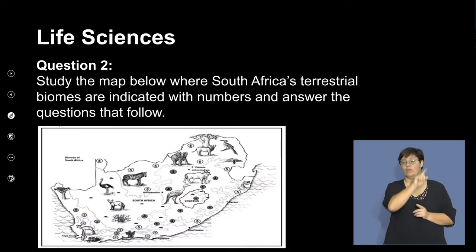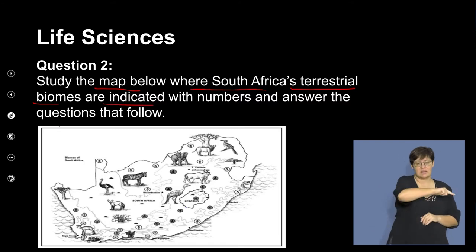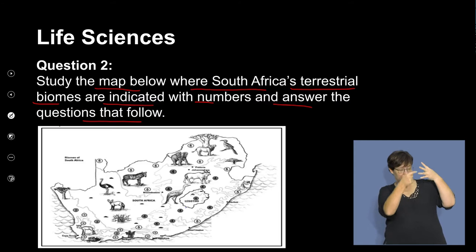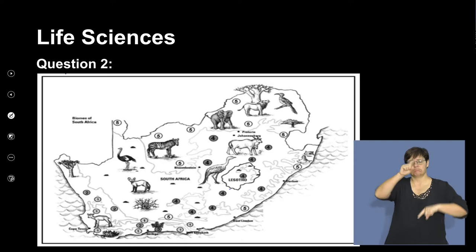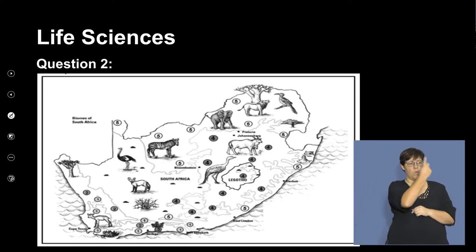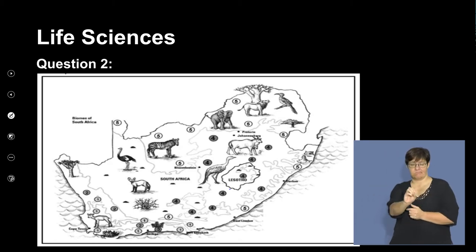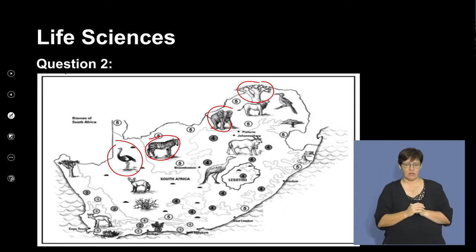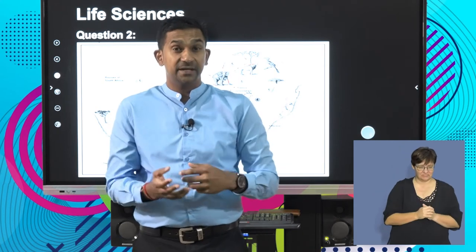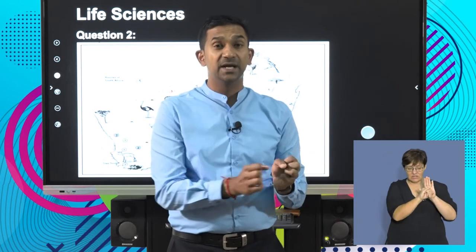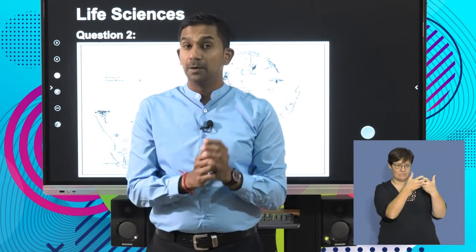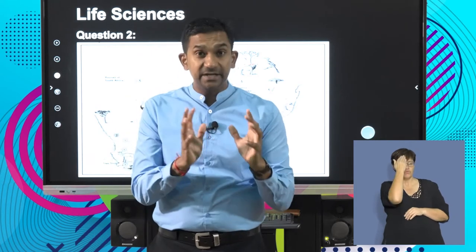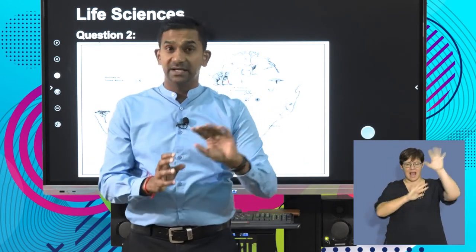The question asks us to study a map of South Africa where terrestrial biomes are indicated with numbers 1 to 5, and answer the questions that follow. On this map the various biomes are illustrated and outlined, with unique species of plants and animals shown. It's important that when you recognize these biomes, you can identify the unique species of animals and plants that inhabit these areas. My advice is to first be familiar with the geographical location of these biomes — create a color map and color these out.